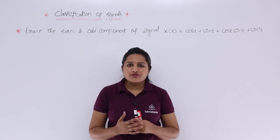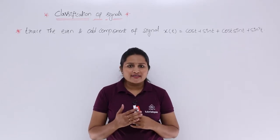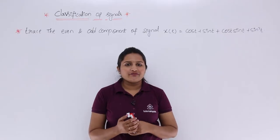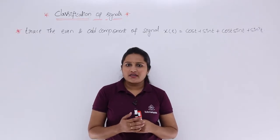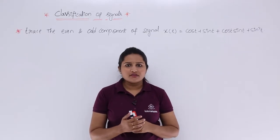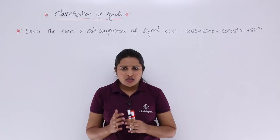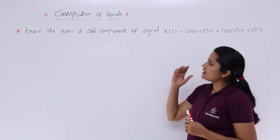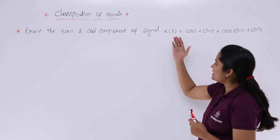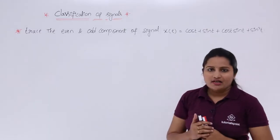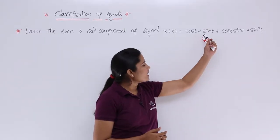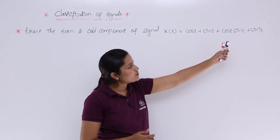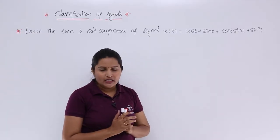In this video we are going to discuss one more example related to even and odd component of a signal, which we classified under classification of signals. The problem is: find the even and odd component of the signal x(t) = cos t + sin t + cos t · sin t + sin² t.